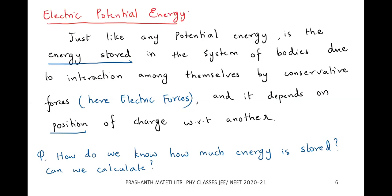We are understanding this in the form of electrical energy — that is electric potential energy. It is nothing but the energy stored in a system of charges interacting with conservative forces — here, the electric force. Since it is a potential energy, it depends on the position of the charge with respect to another. The energy stored by virtue of its position depends on separation.